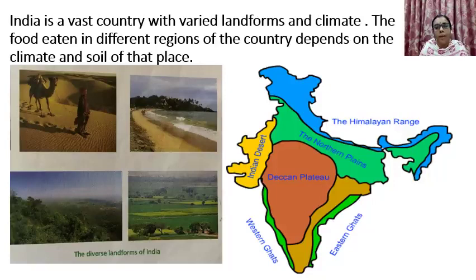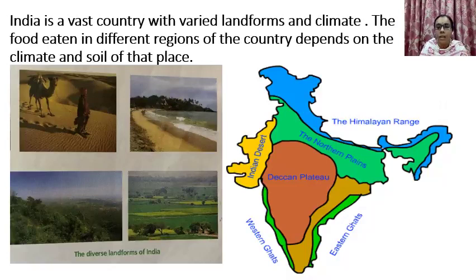In the previous class, we revised the different landforms of India: the Himalayan Range, the Indian Desert, the Northern Plains, Deccan Plateaus, Western Ghats, Eastern Ghats, Southern Plains, and Islands. India is a vast country with varied landforms and climate.